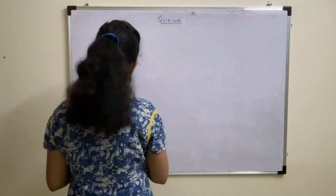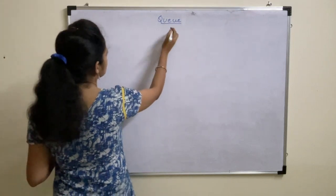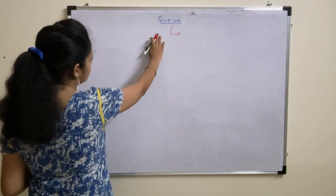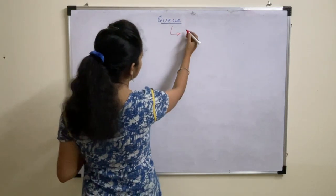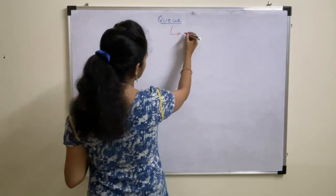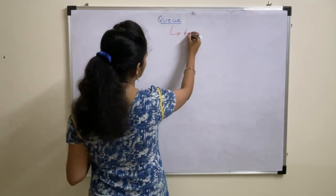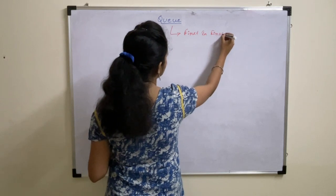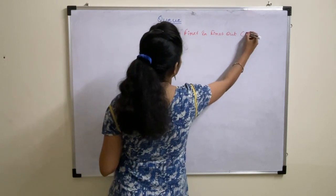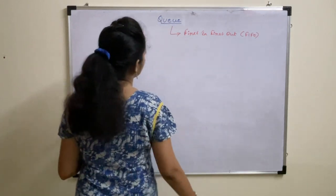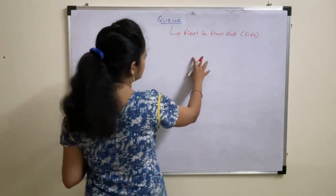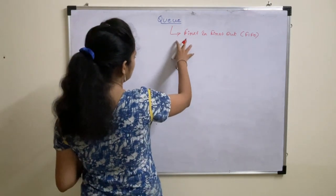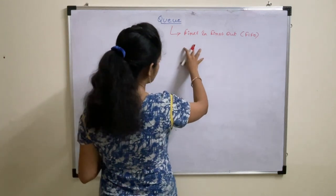In this lecture we will start Queues. We know already some introduction part of Queues was discussed in our previous lectures. What is meant by Queue? What is the principle we use in Queue? It follows First In First Out principle. That means the element which is inserted first is the one which we are going to delete first. Whereas coming to Stack, Stack follows Last In First Out.